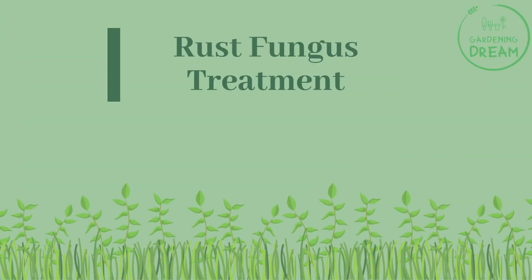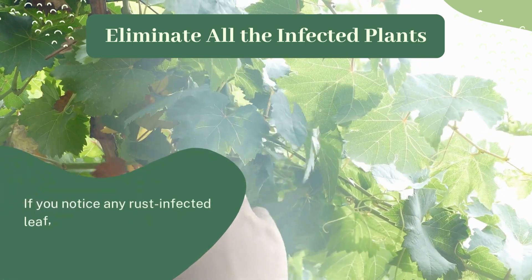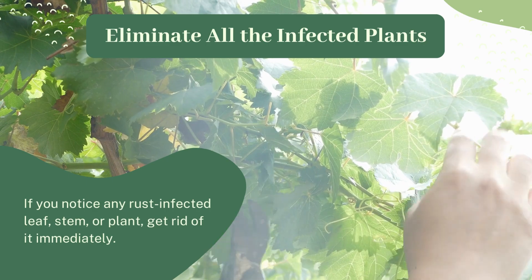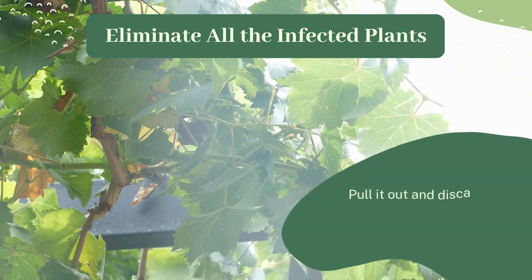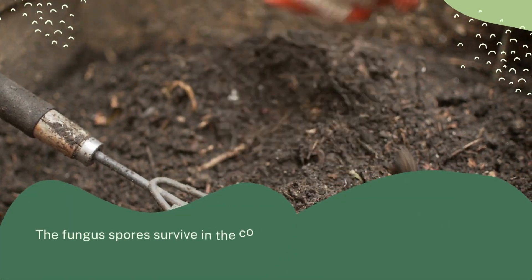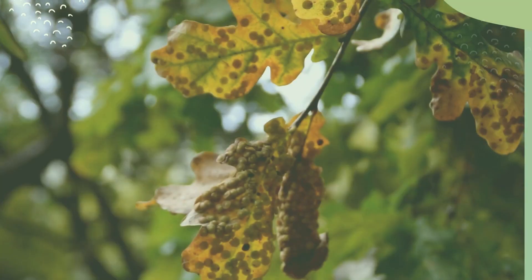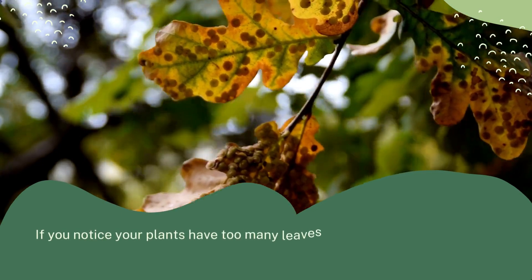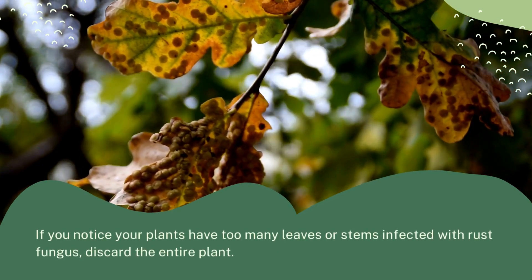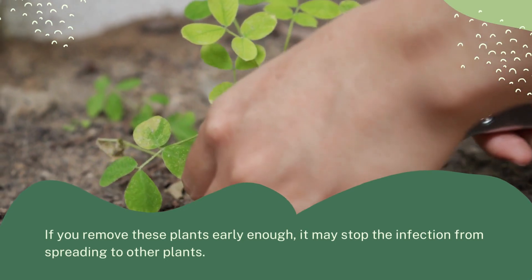Rust fungus treatment: Eliminate all the infected plants. If you notice any rust infected leaf, stem, or plant, get rid of it immediately. Pull it out and discard it in the trash. Do not compost any infected plant parts. The fungus spores survive in the composting process to infect your garden again when used as compost. If you notice your plants have too many leaves or stems infected with rust fungus, discard the entire plant. If you remove these plants early enough, it may stop the infection from spreading to other plants.